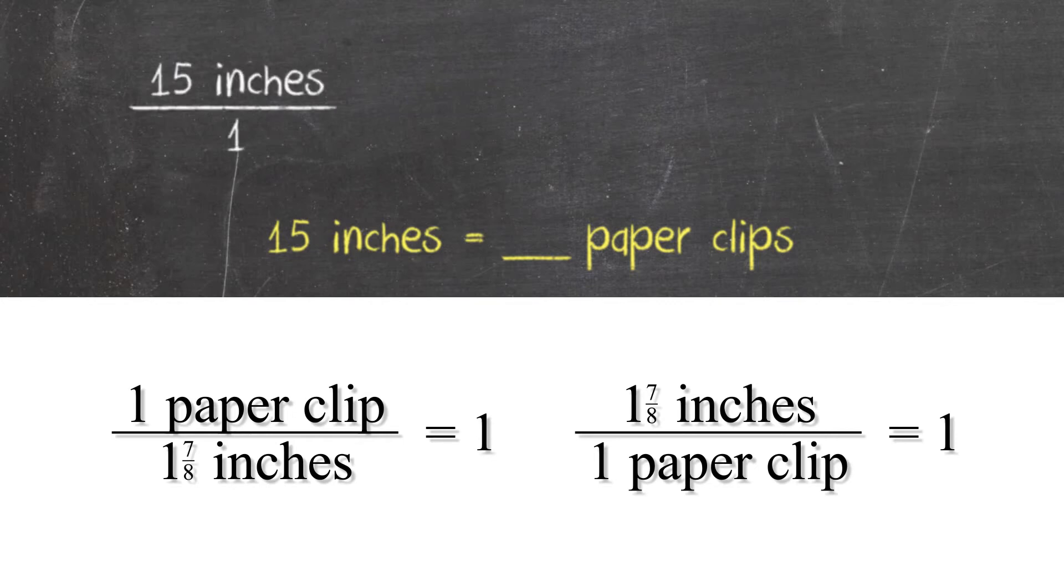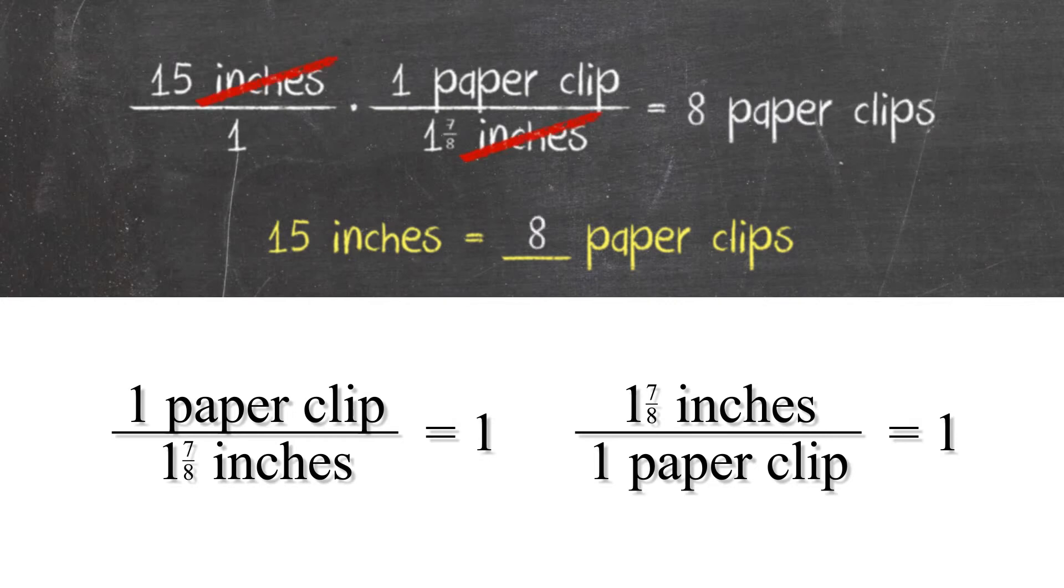If I multiply 15 inches by a conversion factor, then I will in essence be multiplying 15 inches by 1 in disguise and hence not change its value. We do this strategically so the units cancel and we're left with a distance that's equal to what we started with because we only multiplied the original distance by 1.